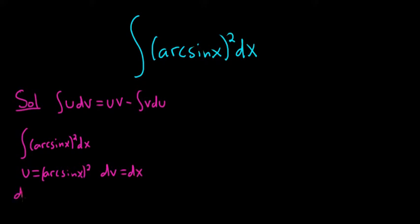Taking the derivative here, we'll use the power rule. You put the two in the front, and you get arcsine of x to the first power times the derivative of the inside. That's via the chain rule. So 1 over the square root of 1 minus x squared dx. Then we'll integrate dv. That'll give us v. Integrating dx gives us x.